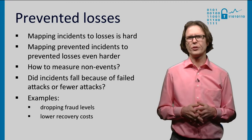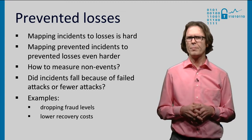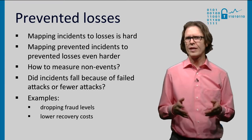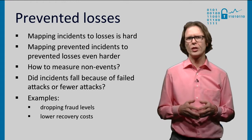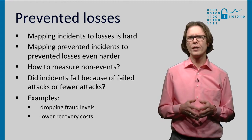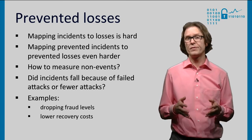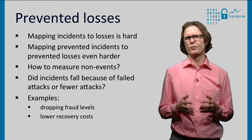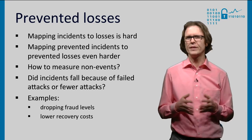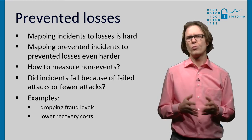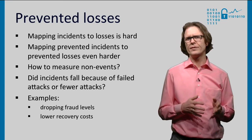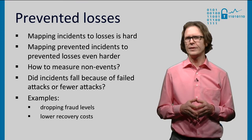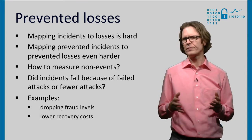A final indicator of the security level are prevented losses. Mapping incidents to losses is hard, as it requires us to quantify intangibles. For example, it's hard to quantify the losses after a data breach like the one that happened at the US retail chain Target. It's even harder to map prevented incidents to prevented losses, as that would require us to forecast and monetize the consequences of an incident that didn't happen. Moreover, the causation between an incident that didn't happen and the reason why it didn't happen is typically hard to establish. Did incident rates drop because of failed attacks or because of fewer attacks?